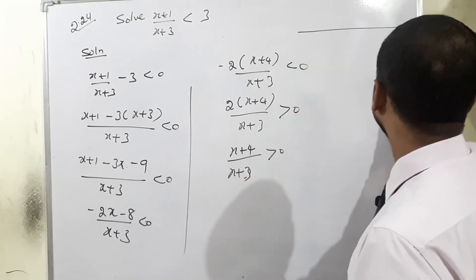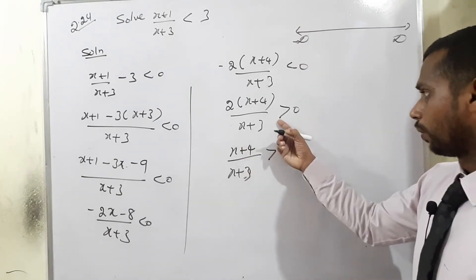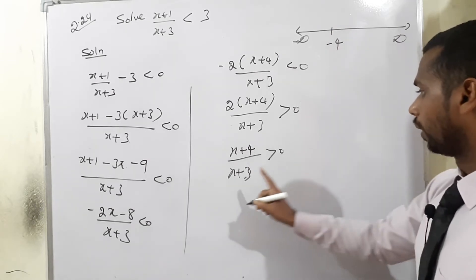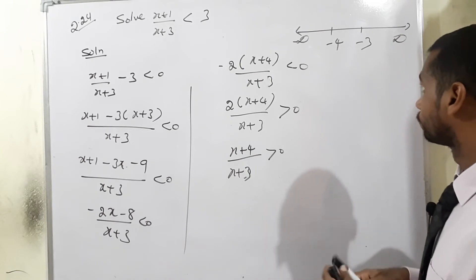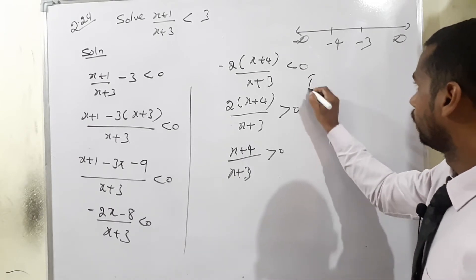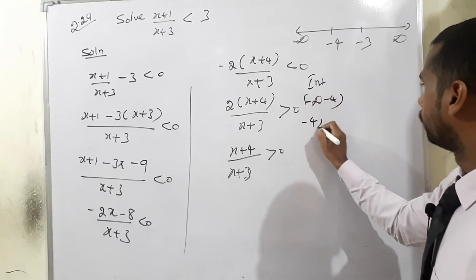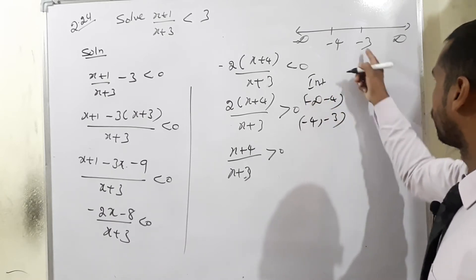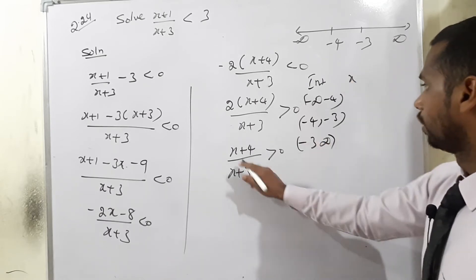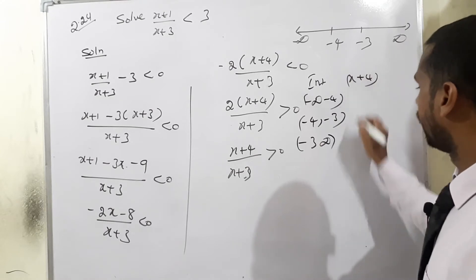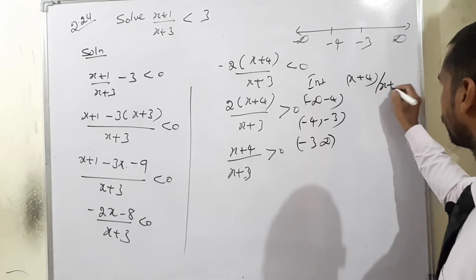Factor out -2: -2(x+4)/(x+3) < 0. Dividing by -2 flips the inequality: (x+4)/(x+3) > 0. On the number line: x+4=0 gives x=-4, x+3=0 gives x=-3. This creates three intervals: (-∞,-4), (-4,-3), and (-3,+∞).